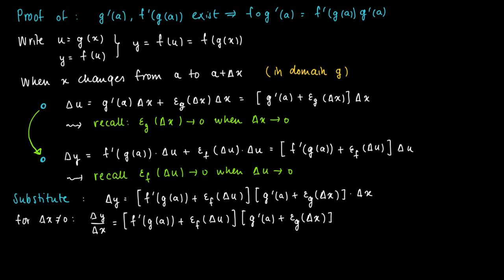Now suppose we let Δx close in on zero. What happens? What happens if we look at the terms in this expression? First of all, if Δx goes to zero, then we see that ε_g(Δx) goes to zero. This was the property of this function ε_g that is continuous in Δx, and also in zero, and in zero it takes on the value zero.